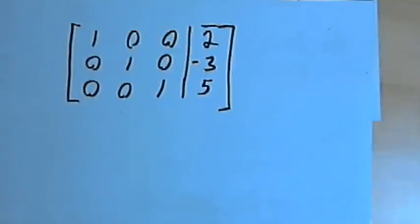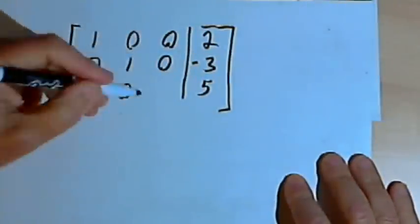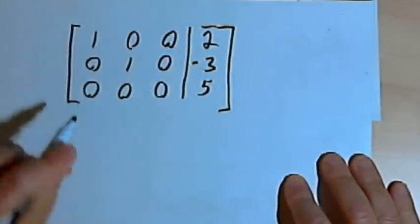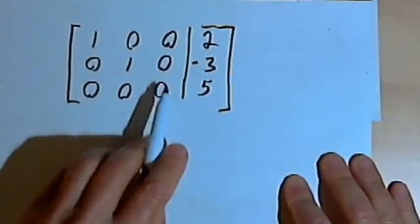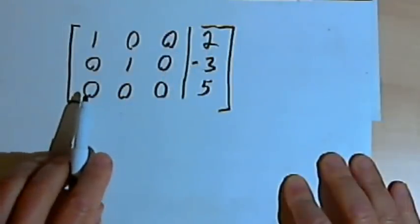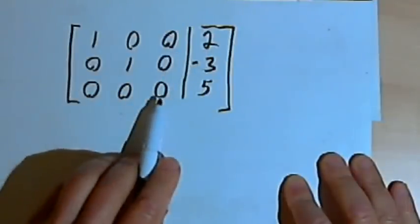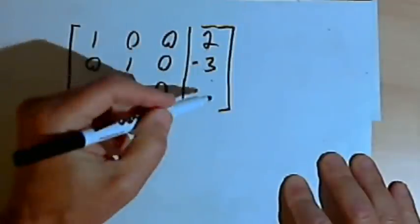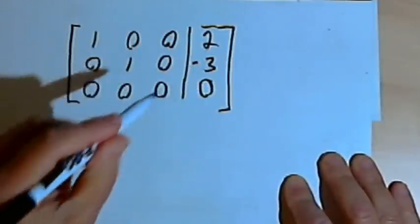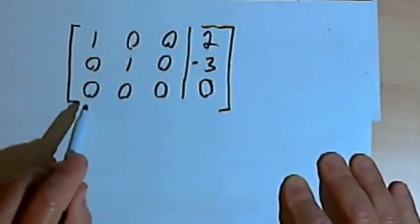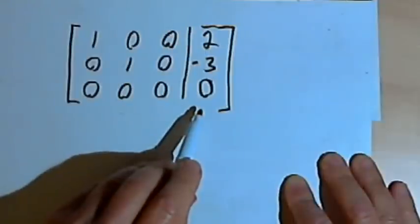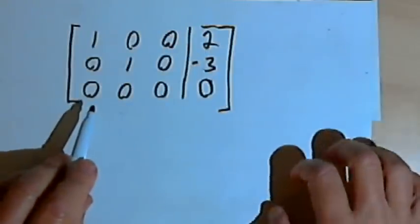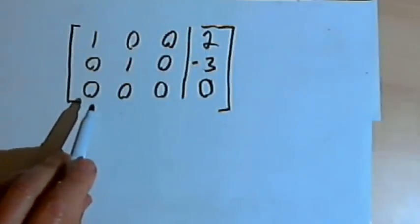Sometimes it's not going to happen. You might end up with the left part of your augmented matrix having all zeros in the bottom row and then some number on the right side, or you might end up with all zeros in the bottom row on both the left and right sides. I want to explain how this can happen and what it means.